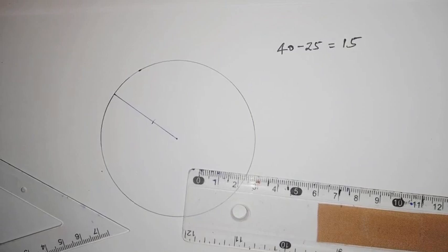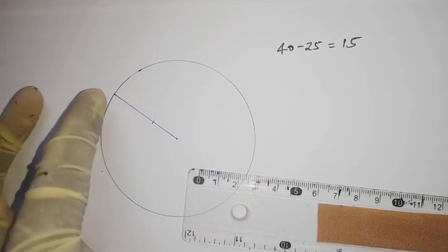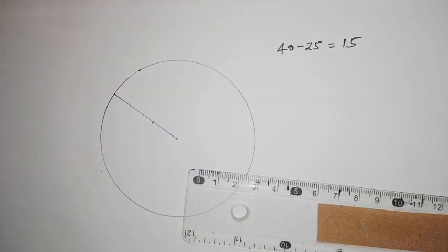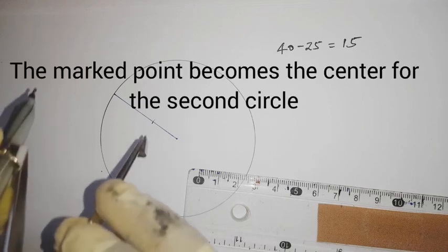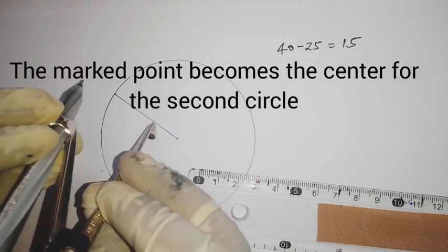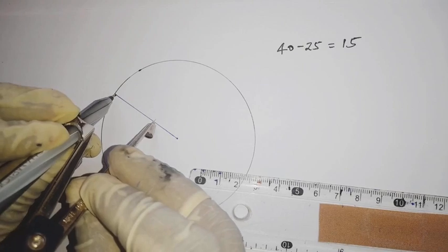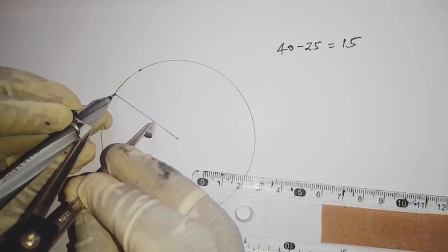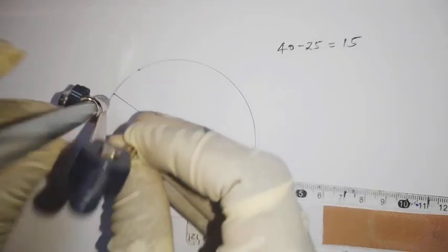So we are going to take this as a center. We adjust our compass to the end point and we draw a circle.